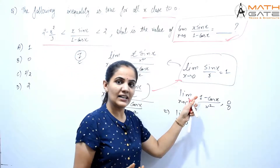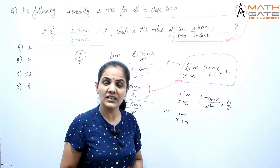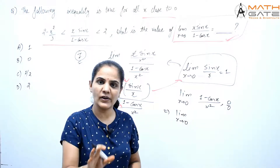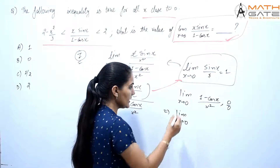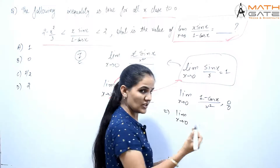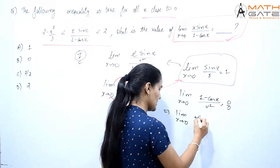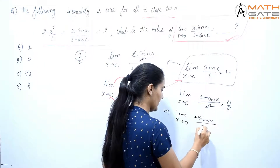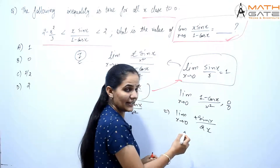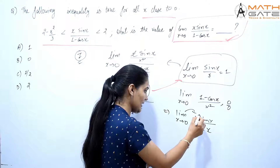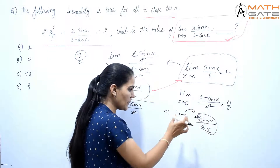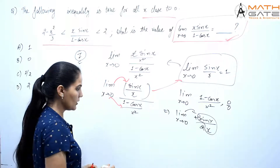According to L'Hôpital's rule, we differentiate the numerator and denominator until we get a finite value. So differentiating (1 - cos(x)) gives us sin(x), and differentiating x² gives 2x. So this becomes limit x tends to 0 of sin(x)/(2x), which equals (1/2)·limit x tends to 0 of sin(x)/x = 1/2.